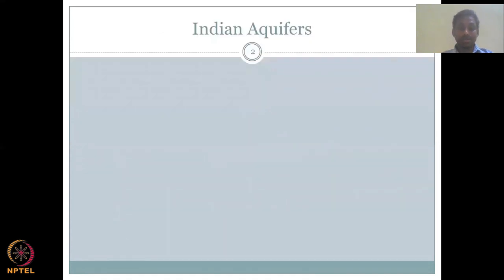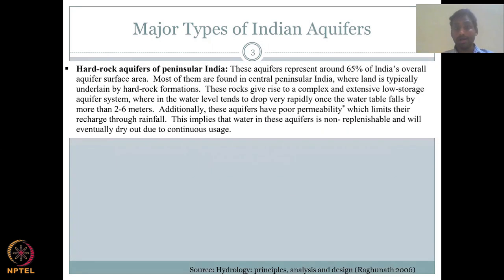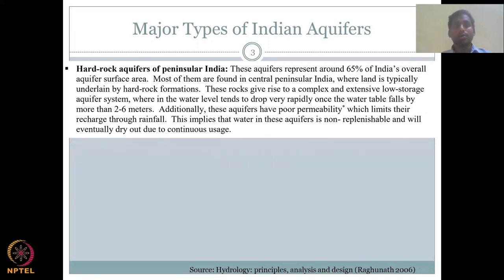Indian aquifers, as per government reports on groundwater hydrology, are mostly classified based on geology. The major types are only two: the hard rock aquifers of peninsular India, which represent about 65% of India's overall aquifer surface. Most of them are found in central peninsular India because that is where hard rock geology is present.